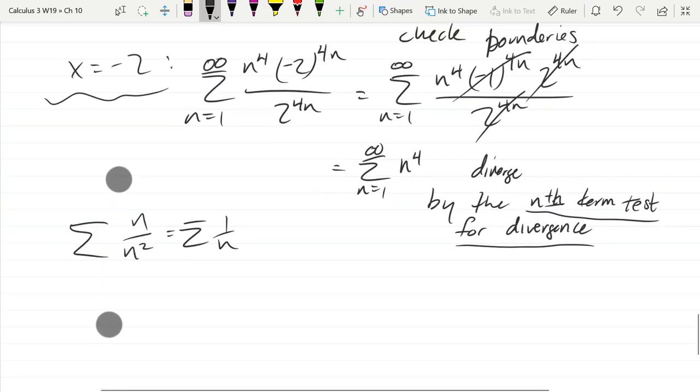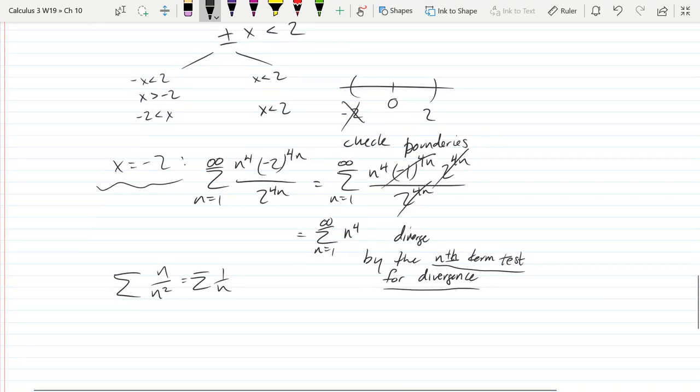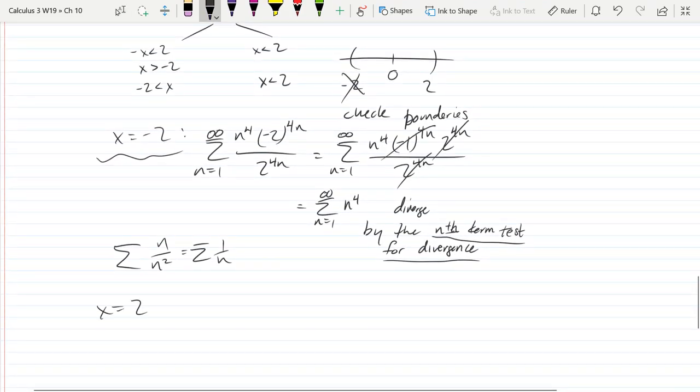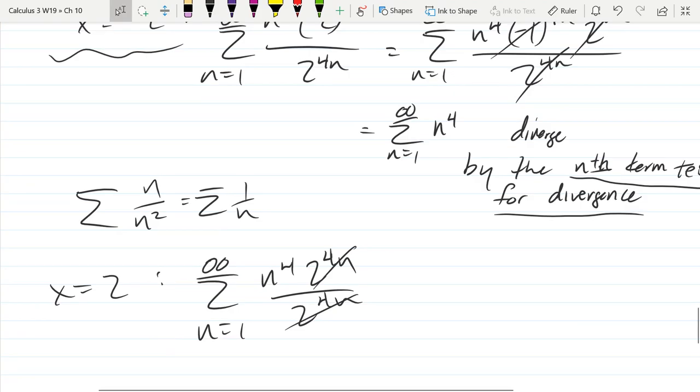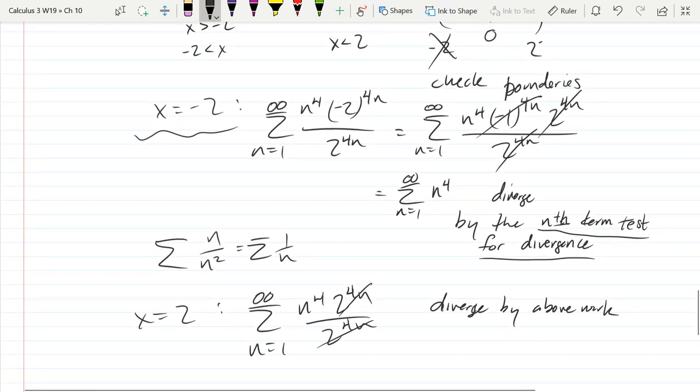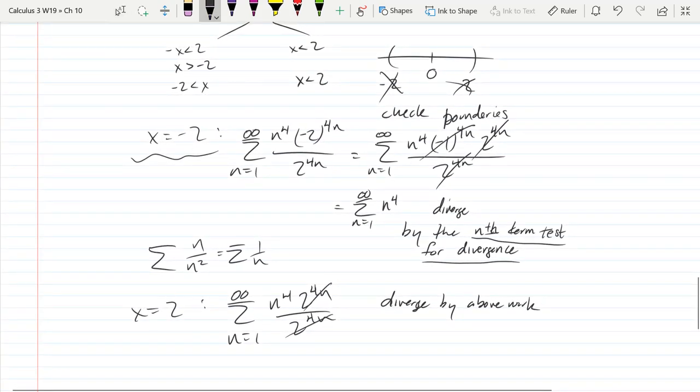So now we're going to check the other endpoint. So negative 2 is out, so we know for sure that it's going to be open on that side. Now we're going positive 2. This one's even easier, or I should say really just as easy. So just straight away, the base 2 terms completely cancel out. And I think I'm just going to say diverge by above. That would be good enough. Alright, and so positive 2 is out, so our interval is the open interval, interval of convergence. Negative 2 to 2, open on both sides.